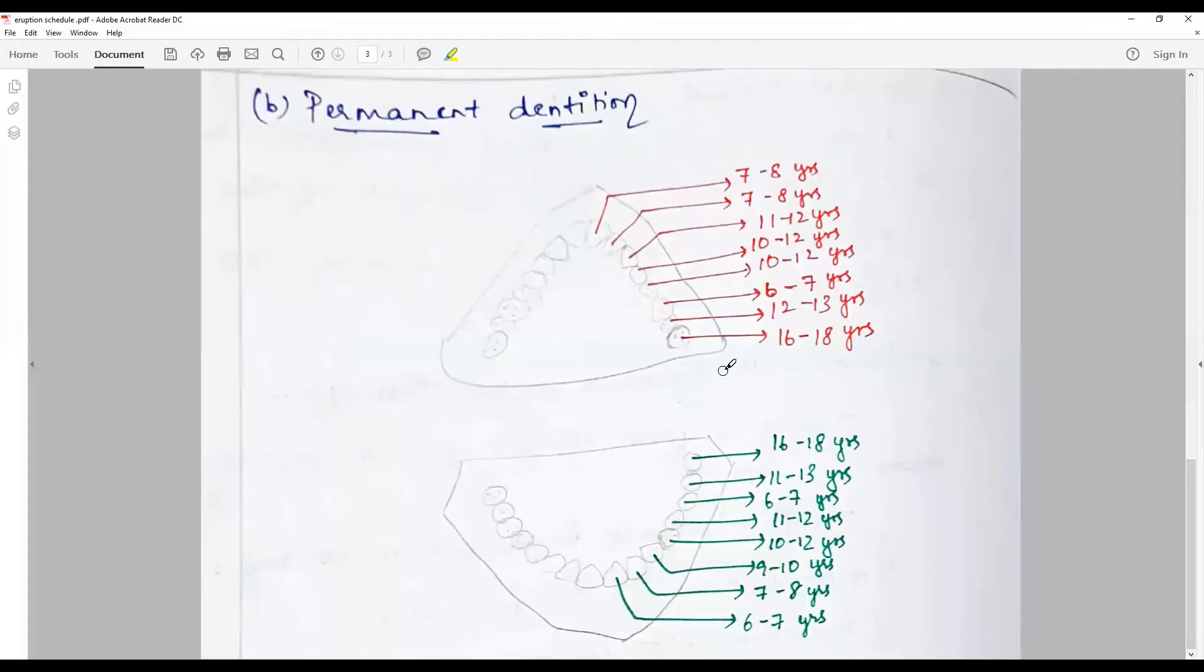In the permanent dentition, this goes like this: six to seven years for the lower central incisors, upper seven to eight years. That's the lateral. Again, the lower lateral seven to eight years. Lower canines nine to ten years, upper canines 11 to 12 years.